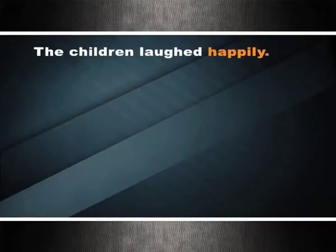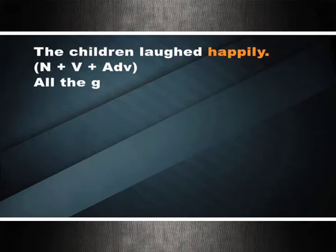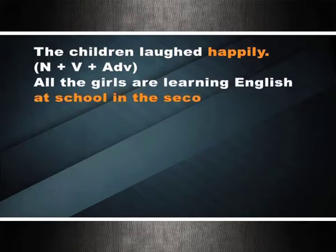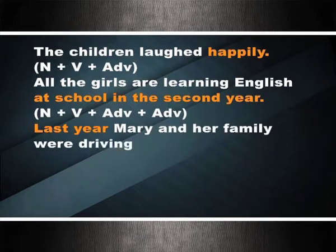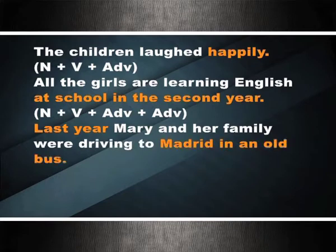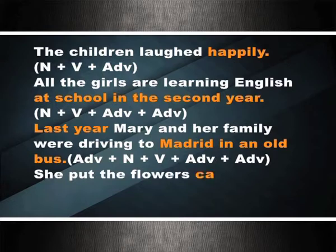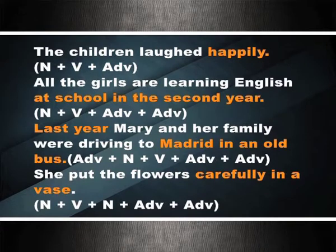A clause often has one or more adverbial phrases. Examples: the children laughed happily (N + V + adverb); all the girls are learning English at school in the second year (noun + verb + adverb + adverb); last year, Mary and her family were driving to Madrid in an old bus (adverb + noun + verb + adverb + adverb); she put the flowers carefully in a vase (noun + verb + noun + adverb + adverb).